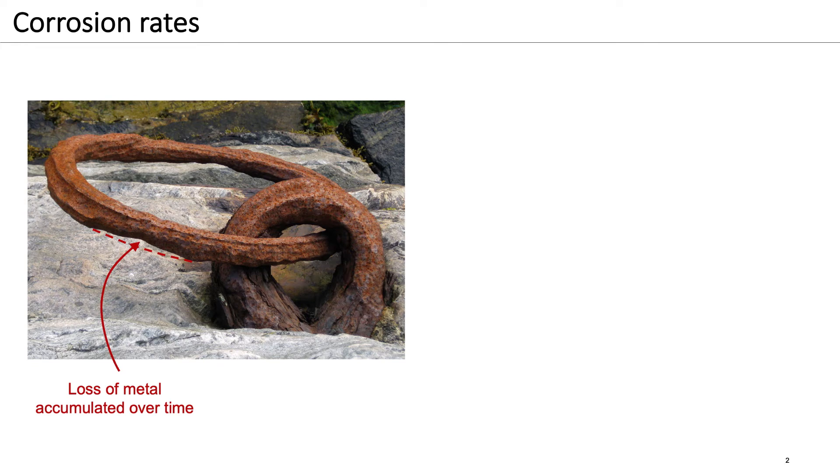The corrosion rate expresses how fast the corrosion process occurs. The corrosion rate is thus related to the time it takes for a certain loss of metal to occur. The example in the photograph shows the sectional loss of the steel ring that had occurred over a certain time.